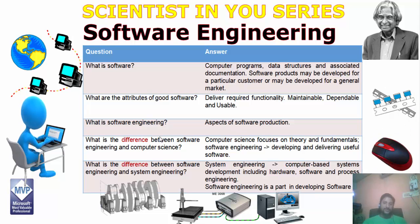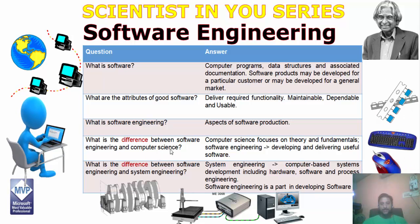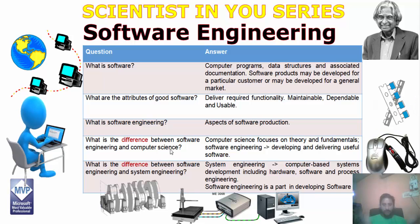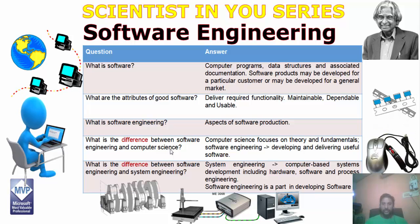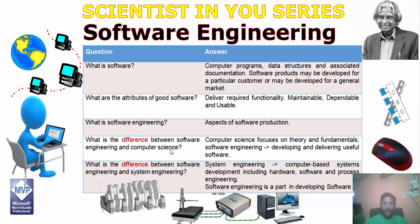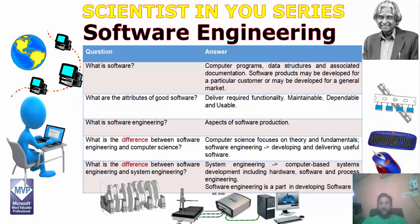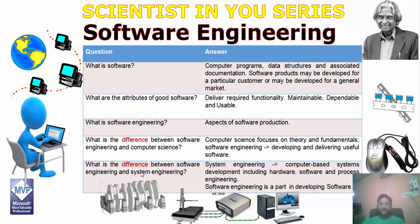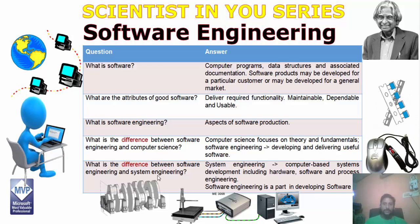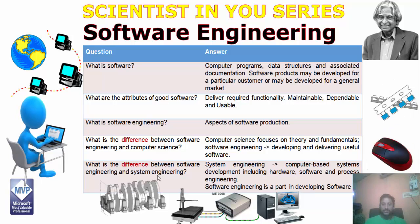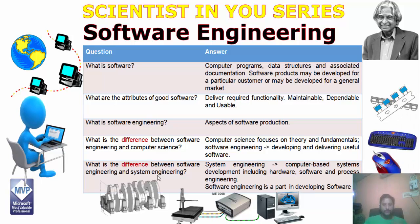If we talk about the difference between software engineering and computer science: computer science is nothing but theories and fundamentals — it is a broad concept. Under computer science, software engineering is a core part in developing software. What is the difference between software engineering and system engineering? System engineering is related to hardware — a computer-based system including hardware — whereas software engineering is nothing but developing software.